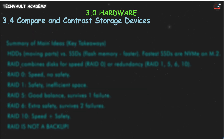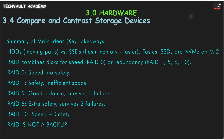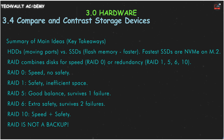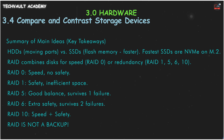For your A+ exam, here are the main ideas. HDDs have moving parts and are slower. SSDs use flash memory and are much faster. The fastest SSDs use NVMe over a PCIe connection, often in an M.2 form factor. RAID combines multiple disks for speed or redundancy. Remember, RAID 0 is for speed only with no redundancy.